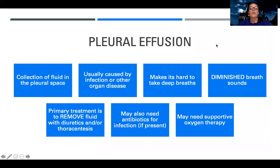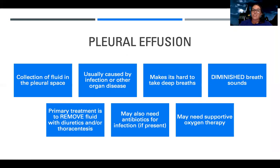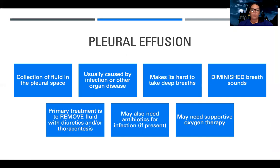There's also what's called pleural effusion. Think of 'effusion' as fluid — this is fluid in the pleural space, which is the space between the two layers of the lung, not inside and not outside, but in the middle. There's a sac around the lung and fluid accumulates there. It's usually caused by an infection, or conditions like liver disease or GI problems can lead to a pleural effusion as well.